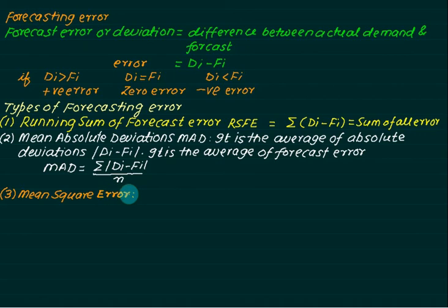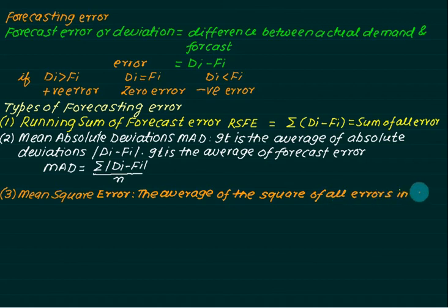Another performance parameter is called mean square error. Again, mean sum squared - whatever the error is, we have to square that error, add it, and divide by the number of sample points. In general it is defined as the average of the square of all errors in the forecast. MSE is given by sum of (Di minus Fi) whole square divided by n.